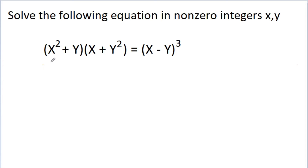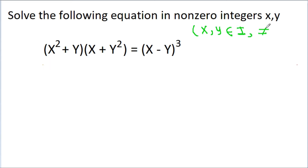In this video, we have given that x squared plus y times x plus y squared is equal to x minus y whole cube, and we have to find nonzero integers x and y. Nonzero integers means x and y belong to integers and are not equal to 0.